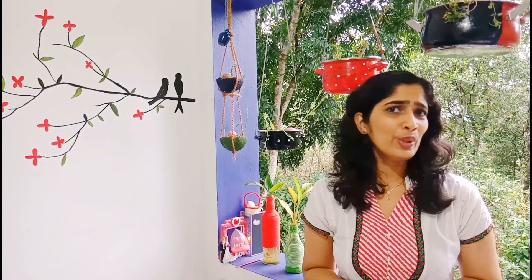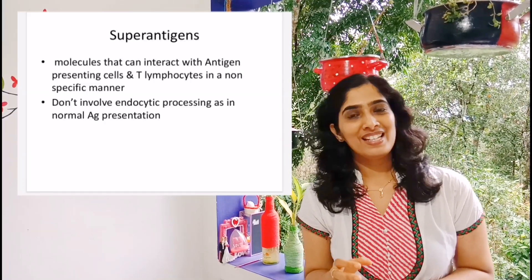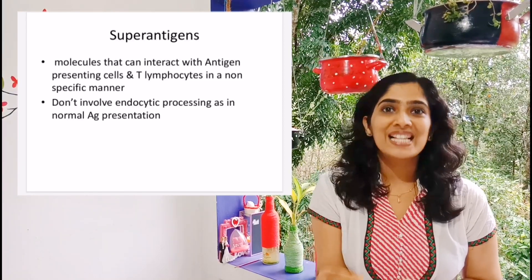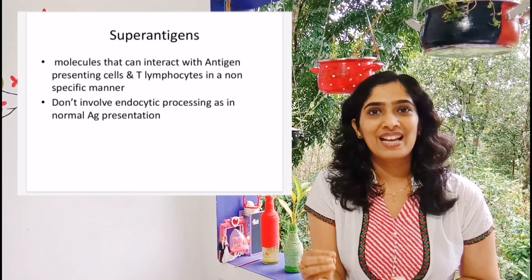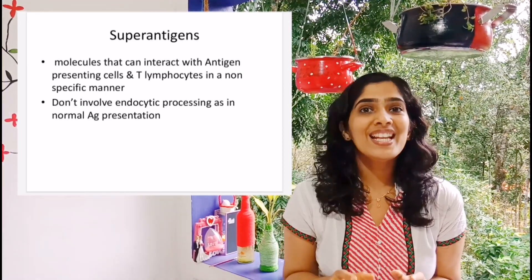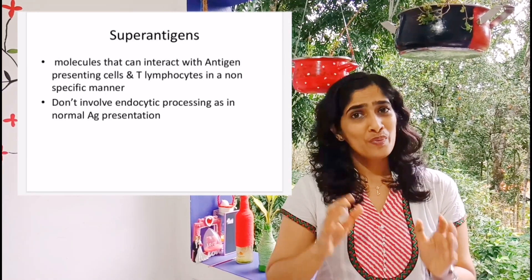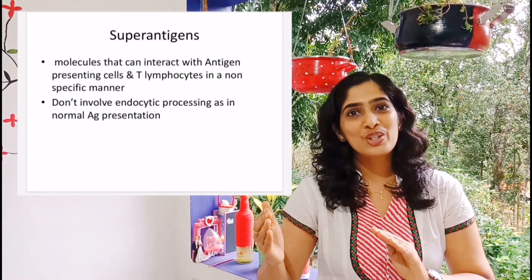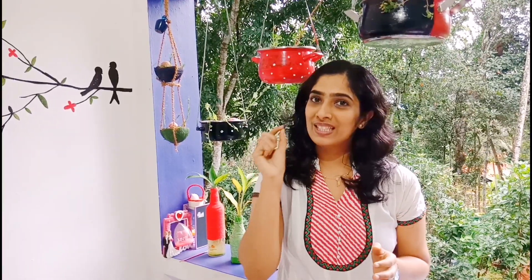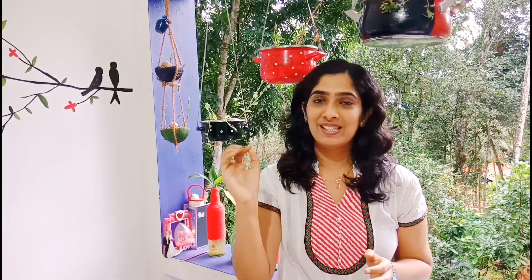Toxic shock syndrome toxin is an example of a superantigen. Superantigens are molecules which can interact with antigen-presenting cells and T lymphocytes in a non-specific manner — meaning they can stimulate a very large number of T lymphocytes without relation to their epitope specificity.